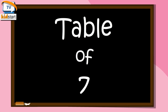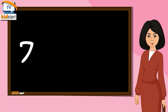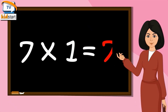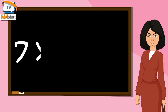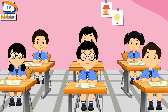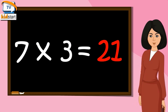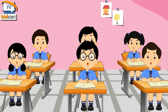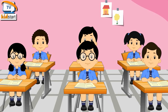Table of Seven. Seven ones are seven. Seven twos are fourteen. Seven threes are twenty-one. Seven fours are twenty-eight.